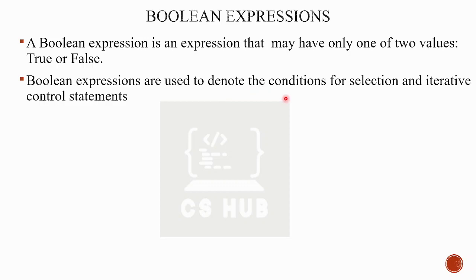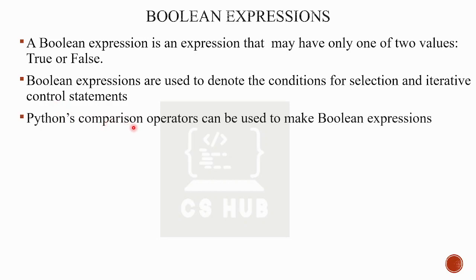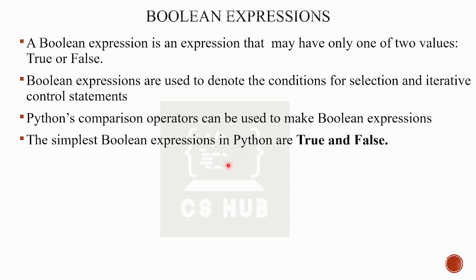A boolean expression is usually denoted as a condition, used for selection and iterative control statements like loops and if statements. We generally use boolean expressions with comparison operators, also called relational operators: greater than, less than, equal to (==), greater than or equal to, and less than or equal to — these are used to make boolean expressions.